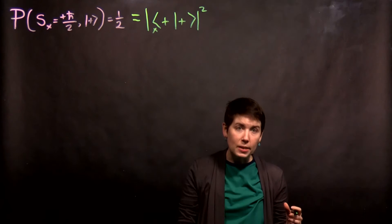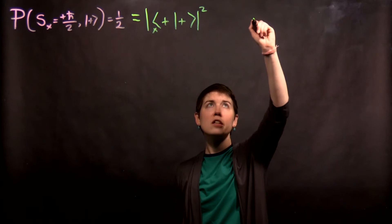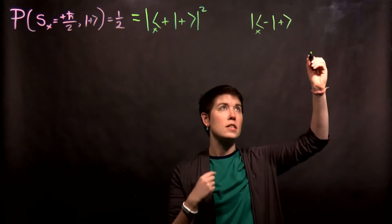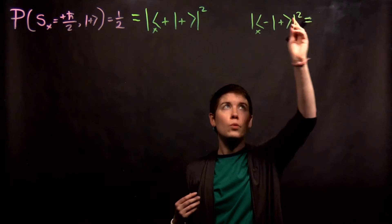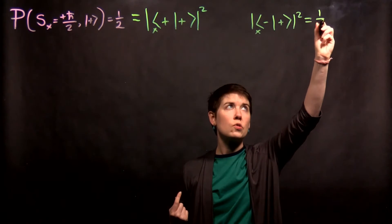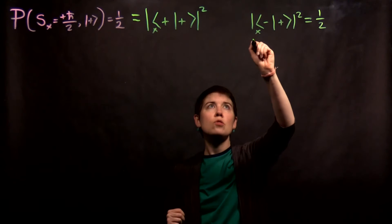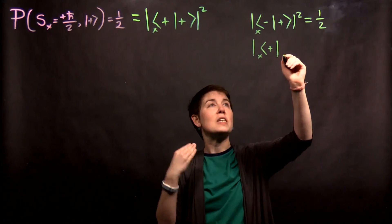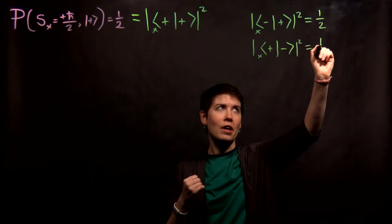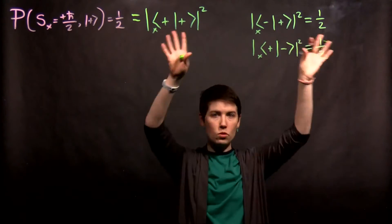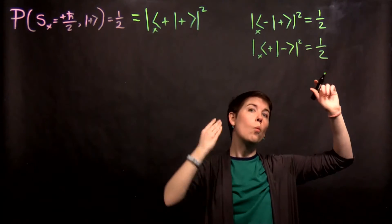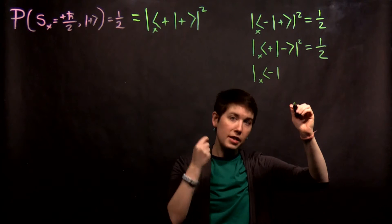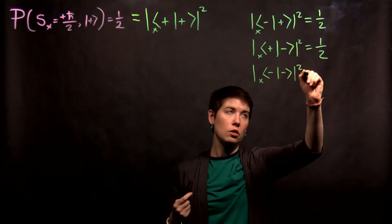We can repeat this experiment for measuring spin down in the x direction when we started with the z direction being spin up, and again when we calculate that out, we also see that that is one half. Repeating this for spin up in the x direction when our initial state was spin down in z — that is also one half. These would be experimental measurements. The fourth case is spin down in the x direction based on our initial state being spin down in z — also one half.